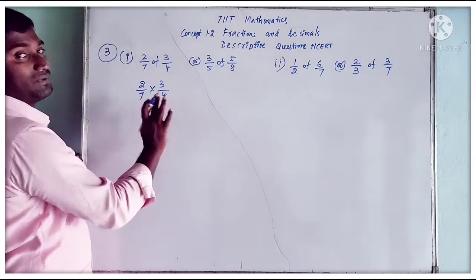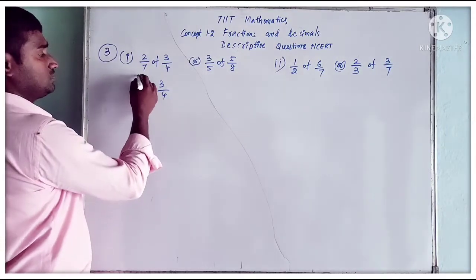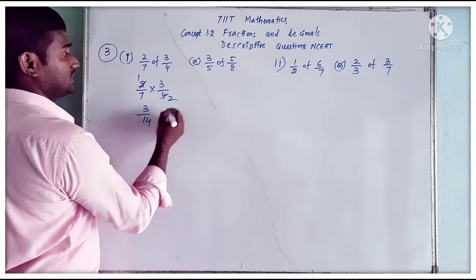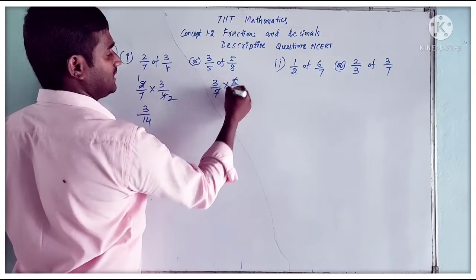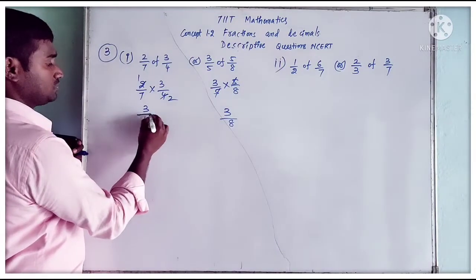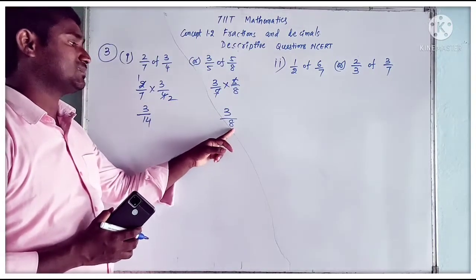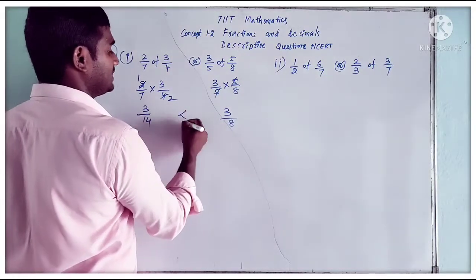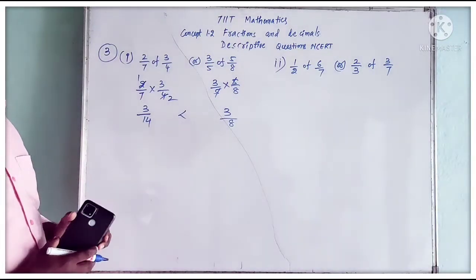There is cancellation: 2 cancels with 4, giving 1 into 3 equals 3 by 14. Next, 3 by 5 of 5 by 8: 'of' means multiplication, so 3 by 5 into 5 by 8. The 5s cancel, giving 3 by 8. Now we have two fractions with the same numerator: 3 by 14 and 3 by 8. When fractions have the same numerator, the one with the smaller denominator is greater. So 3 by 14 is less than 3 by 8. Therefore 3 by 5 of 5 by 8 is the greatest.